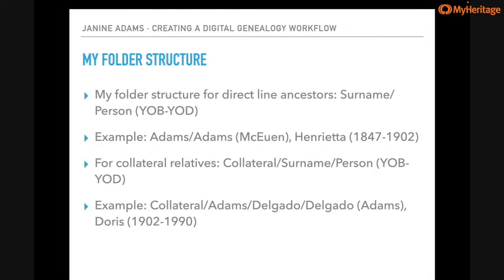After researching a while, I decided to separate collateral relatives from direct line ancestors in my folder structure. All I did was embed a folder called Collateral under each surname folder. So for collateral relatives: Collateral, then the surname of the family line, then the person's name with birth and death years. The birth and death years help differentiate people with the same name. For Doris Adams Delgado, her folder is under Collateral – Adams – Delgado (Adams, Commodore), 1902–1990.